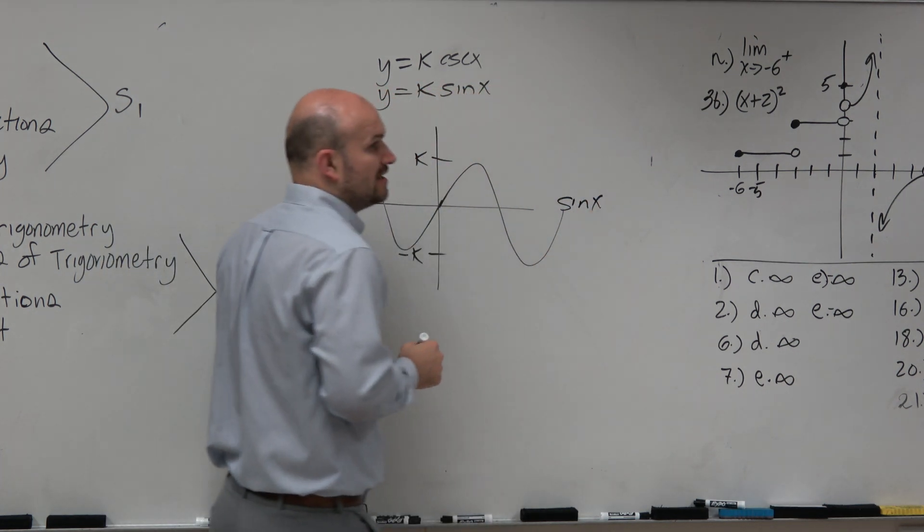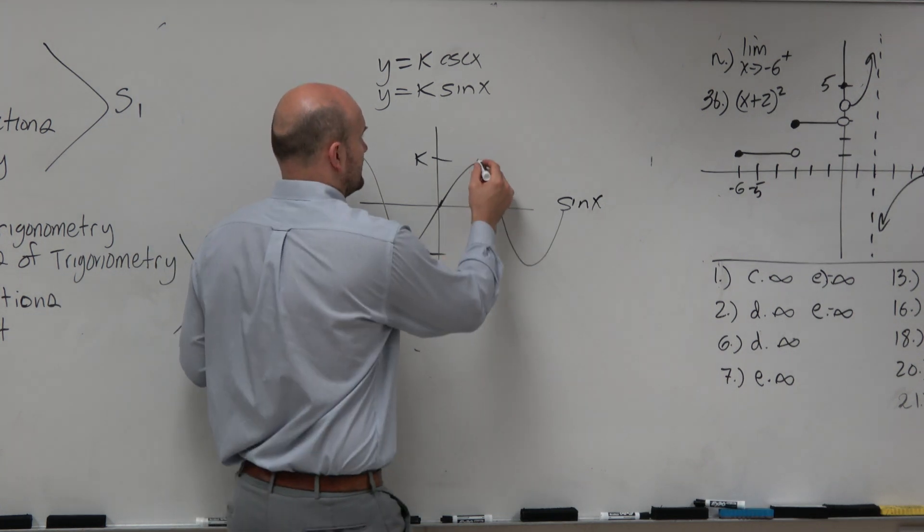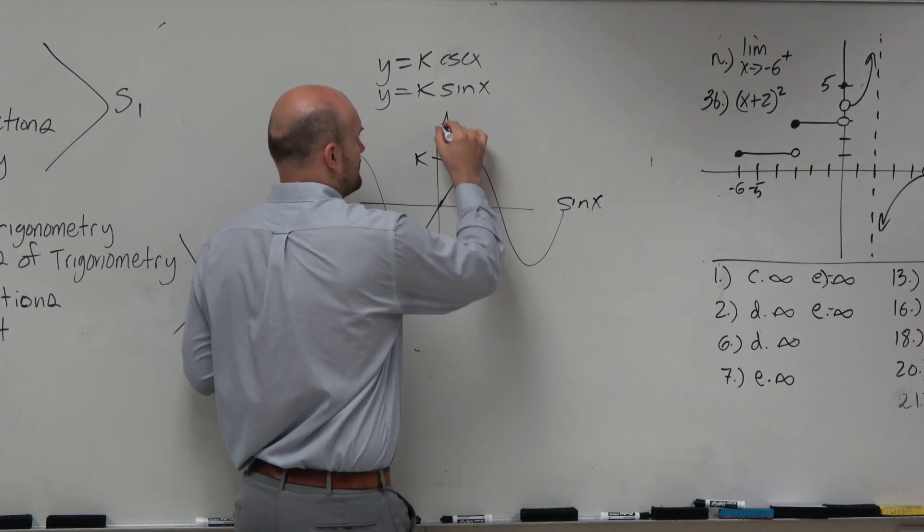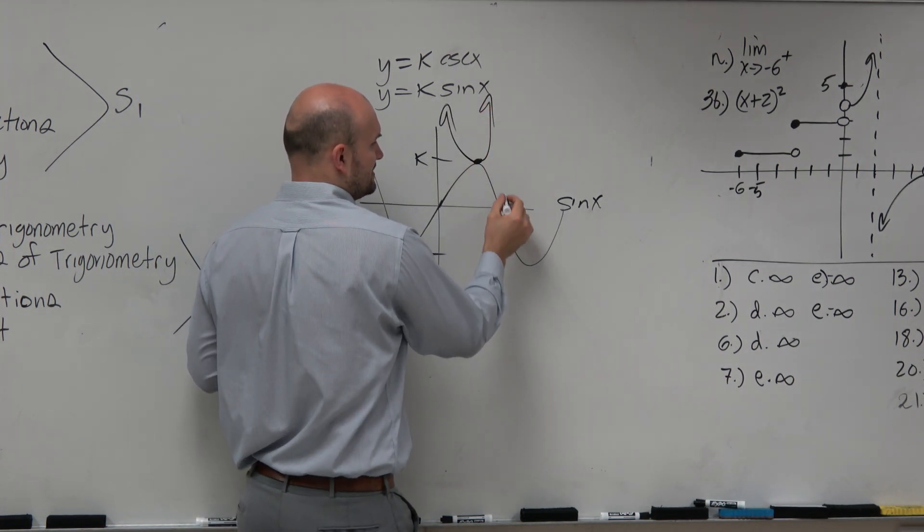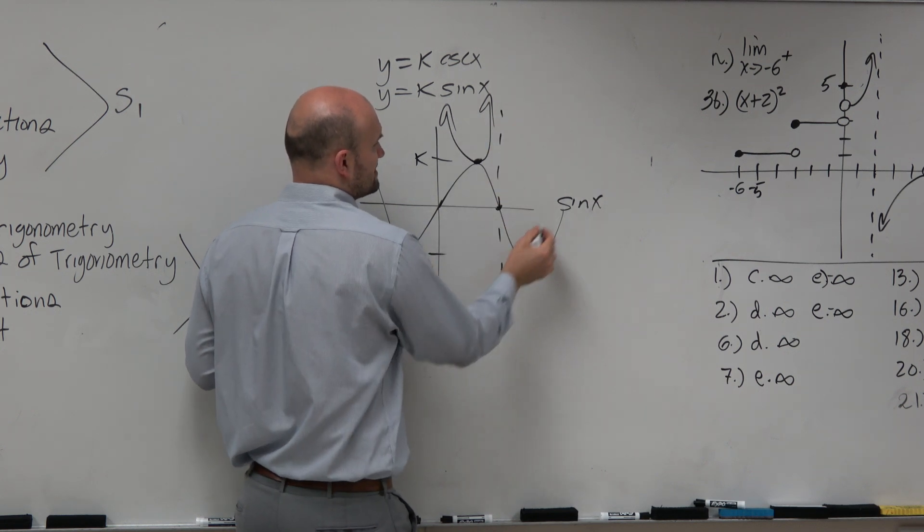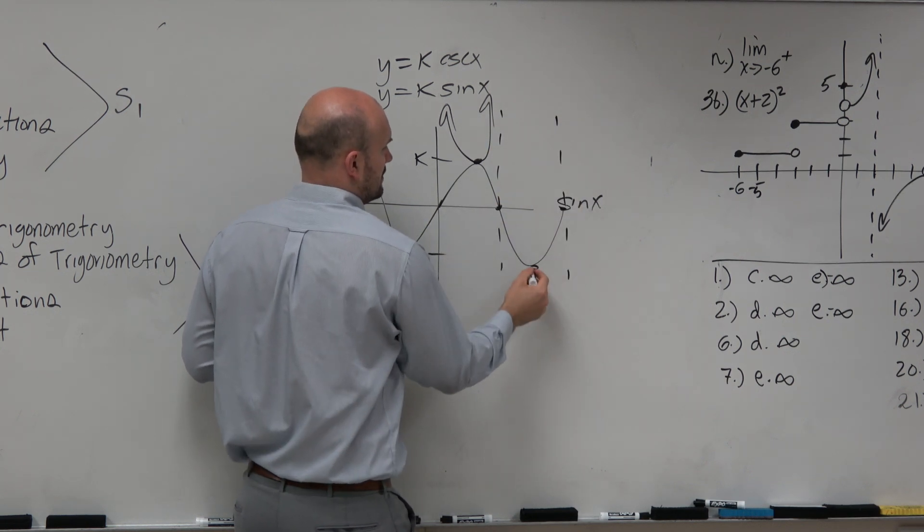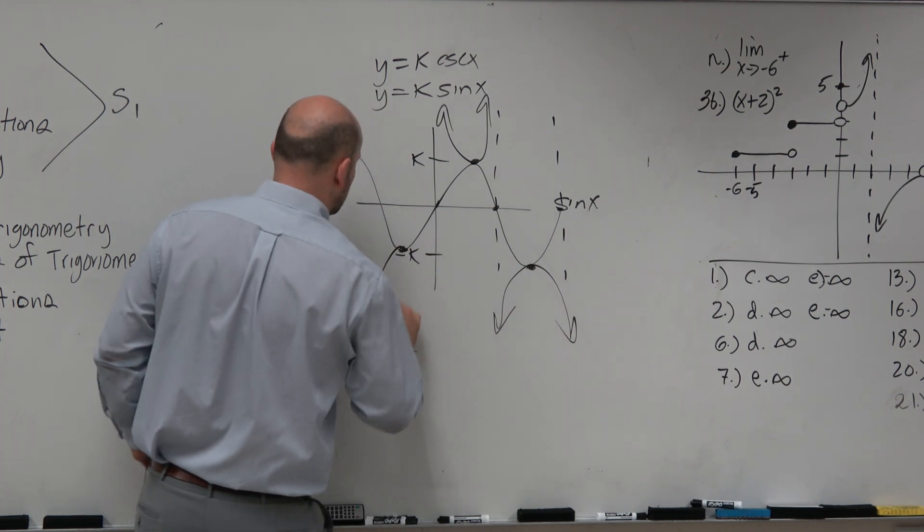So if you remember, how do we figure out what the cosecant graph looked like? If you remember, we reflected about the things, and there was an asymptote. So now, again, we don't really need...